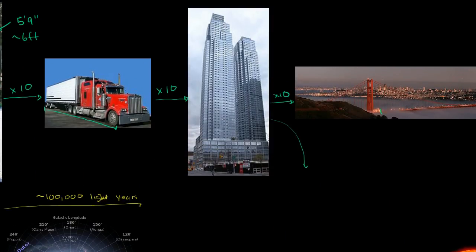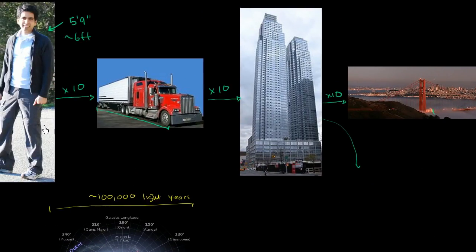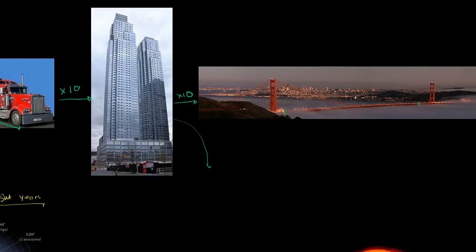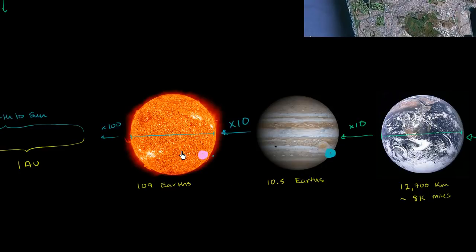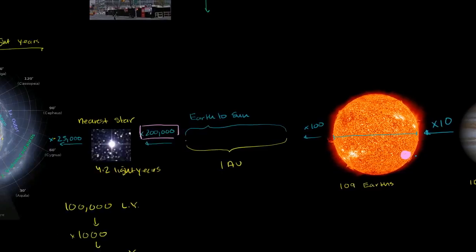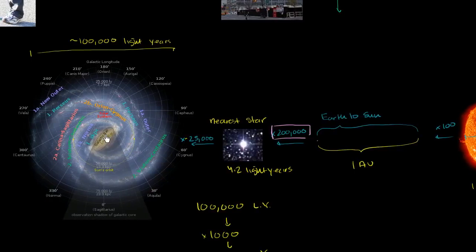And already, this is an unfathomable distance. So in the whole scheme of things, not only are we pretty small, and not only are the things we build pretty small, and not only is our planet ultra small, and not only is our sun ultra small, and our solar system ultra small, but our galaxy is really nothing compared to the vastness of the universe.